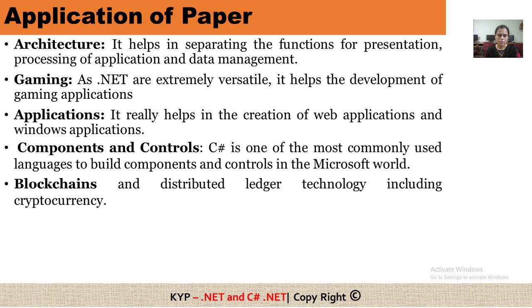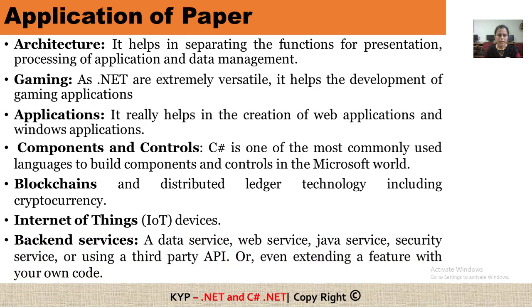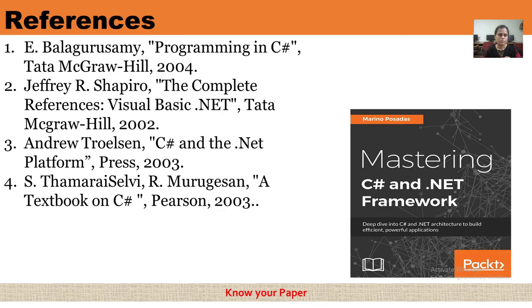Next is blockchain — including blockchain and distributed ledger technology, including cryptocurrency. Then Internet of Things, which covers IoT devices. Then backend services, which include data services, web services, Java services, security services, or using a third-party API, or even extending a feature within our own code. These are the reference books which you can follow for learning this subject. Thank you.